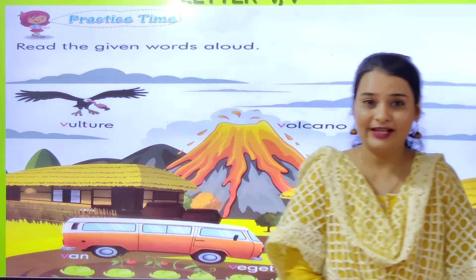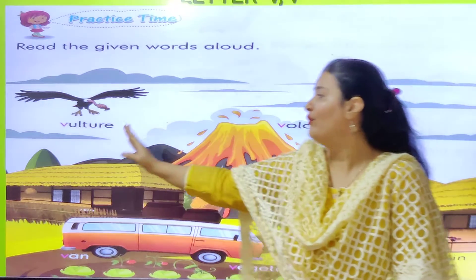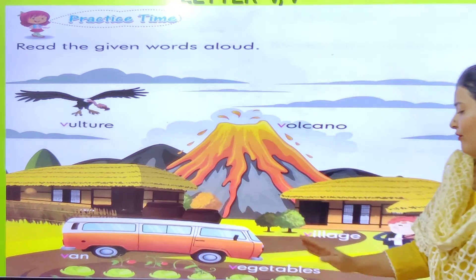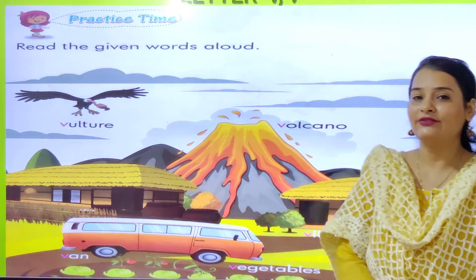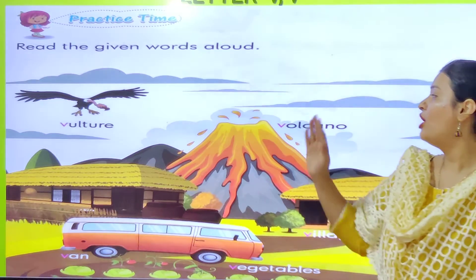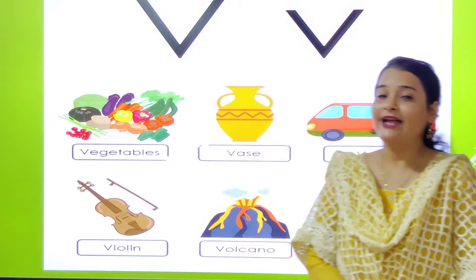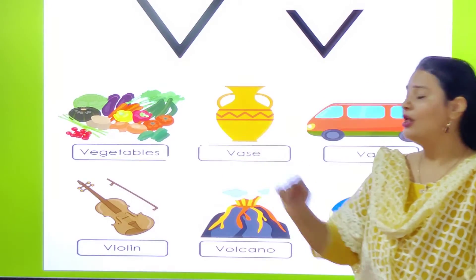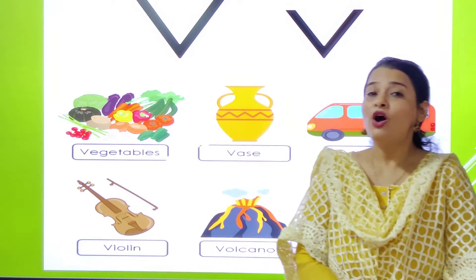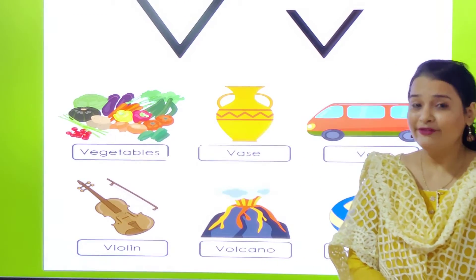So V for volcano. V for vulture, V for vans, V for vegetables, V for village, V for volcanoes. Now next slide — here also we can see some objects that start from letter V.